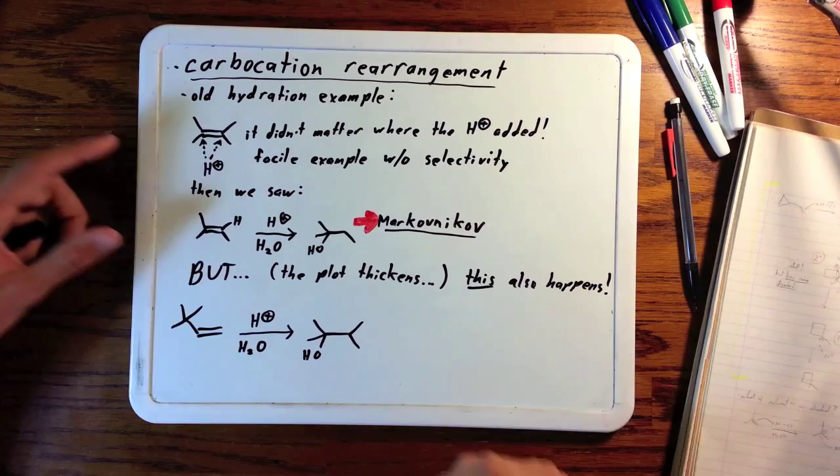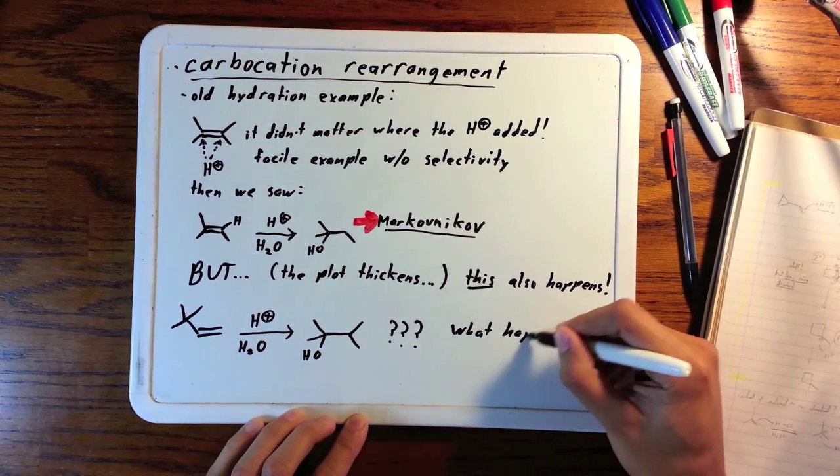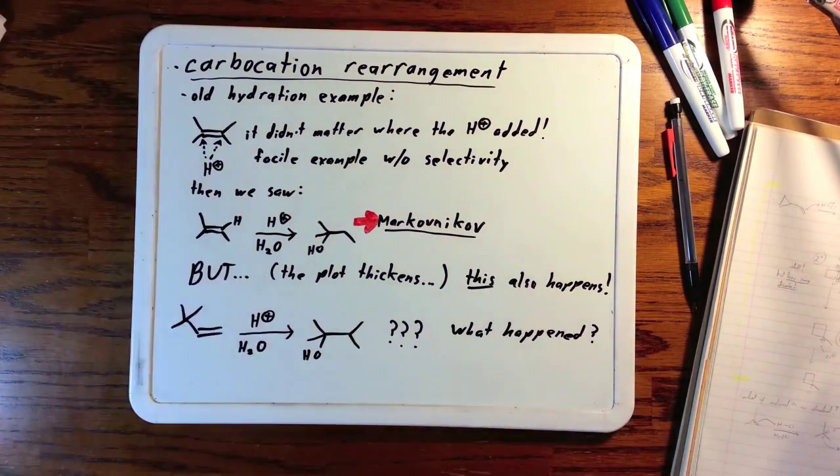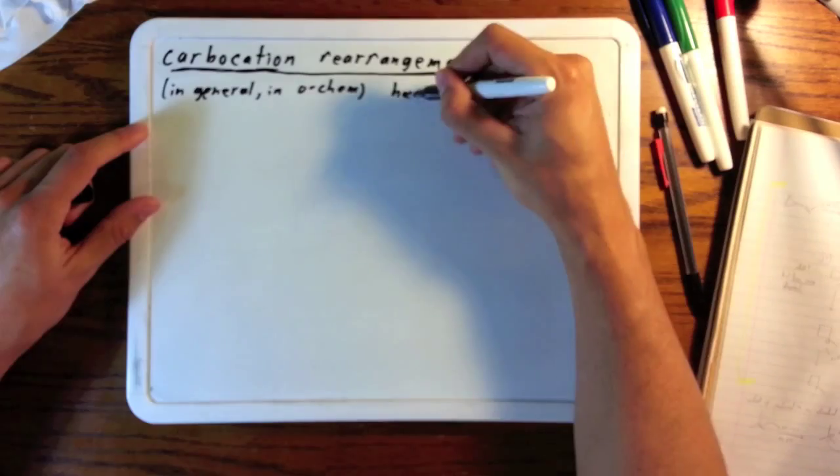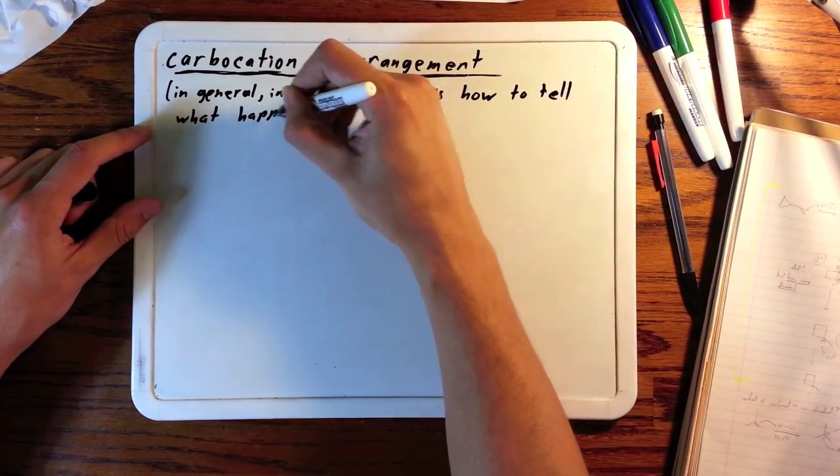You would isolate your product, do some NMR and find this - that does not look like our starting material. I'm going to show you a general approach you'll want to take with figuring out organic chemistry problems where you don't know exactly what happened.